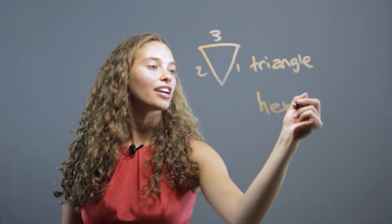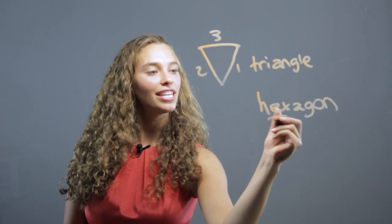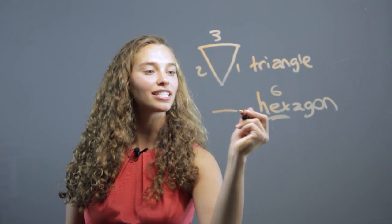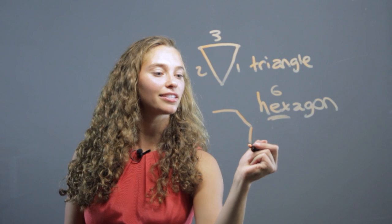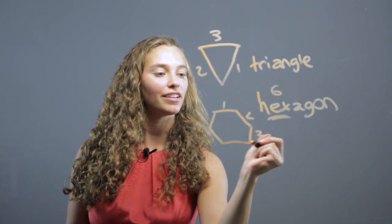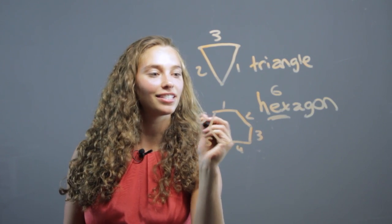Hex, hexagon, we know that this means six. So a hexagon will have six sides, or six points. One, two, three, four, five, six.